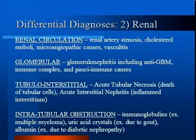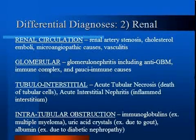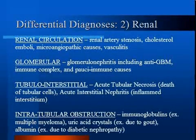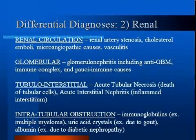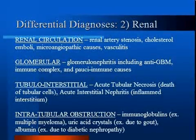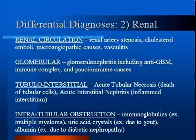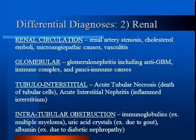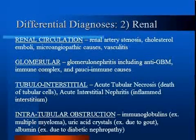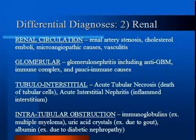Acute tubular necrosis is death of tubular cells, often due to prolonged ischemia or nephrotoxic drugs. Acute interstitial nephritis is an inflamed interstitium due to an immune-mediated reaction, often concurrent with allergic symptoms. Renal failure may also be due to intratubular obstruction — for instance, high-protein deposits in multiple myeloma or diabetic nephropathy, or uric acid deposits in gout.